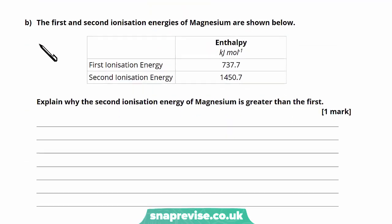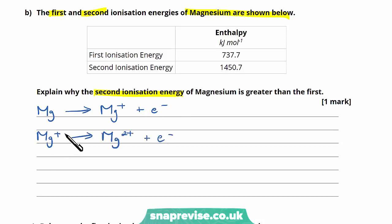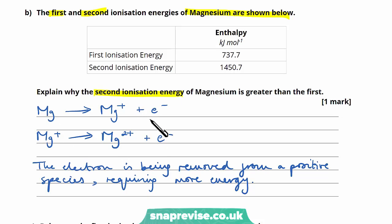Part b: The first ionization energy of magnesium is 737.7 kJ/mol and the second is 1450.7 kJ/mol. Explain why the second ionization energy is greater than the first. It's because the electron is being removed from a positive species, so more energy is required. In the second ionization energy equation, we're removing an electron from an Mg²⁺ ion — that positive species requires more energy. That explanation earns the one mark.